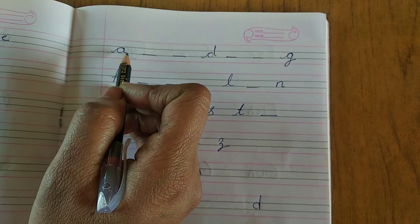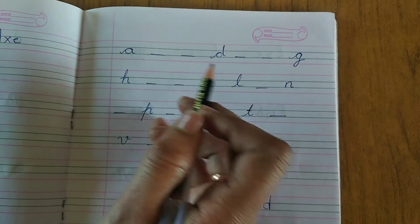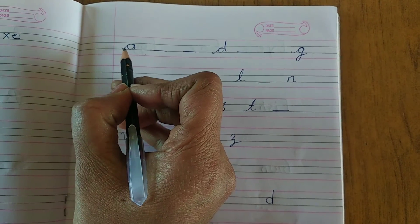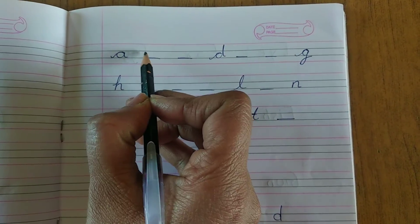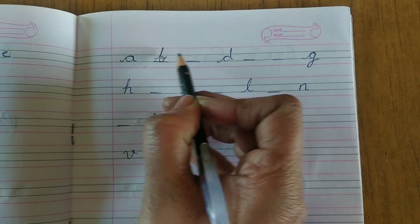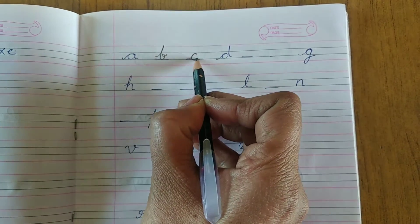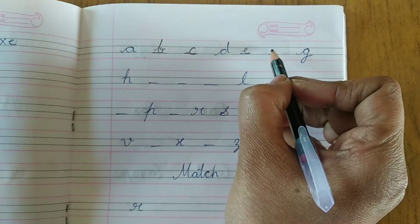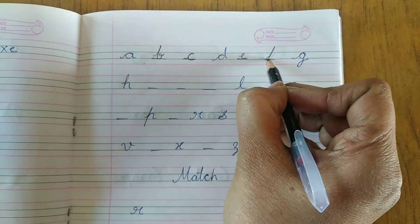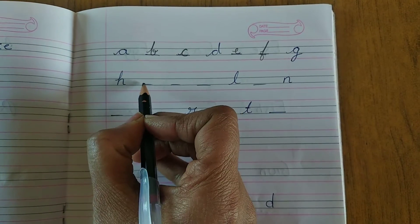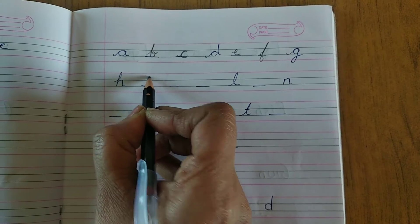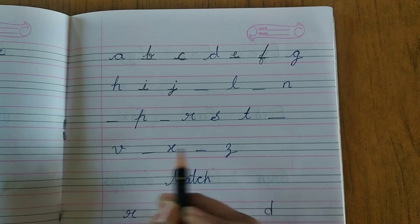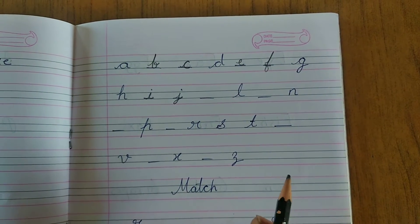Now cursive letters small, I have given you fill in the blanks. You already learned, revision is done, so just like I wrote A, what comes after A? Small cursive B. Then C. Now D is written, so what will you write? E. E. Now next F. After F comes G, already written H, written I, what will you write? I. Then J. In this way you have to complete the cursive small letters fill in the blanks, okay?